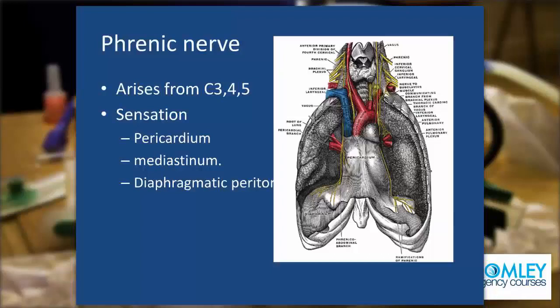However, the phrenic nerve also has sensory fibers to the pericardium, to the mediastinum, and also to the diaphragm on its peritoneal side. So peritoneal sensation is carried in the phrenic nerve, and that's why pain arising from irritation of the peritoneal side of the diaphragm — for example from blood in the abdomen or subphrenic pus — causes referred pain in the tip of the shoulder because of the C4 innervation and the common origin.